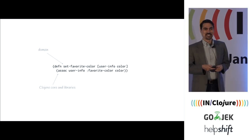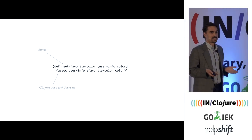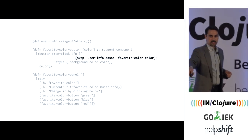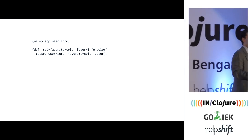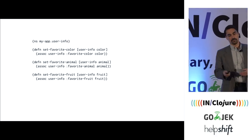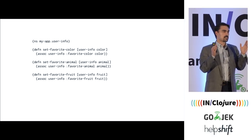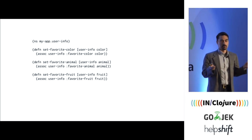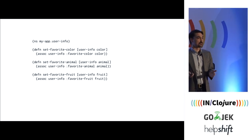Maybe this seems too simple — too basic. But we don't do this enough. We don't actually sit there and think about what our operations should be. I suggest adding a new namespace called user-info where all those operations will go. We add set-favorite-color, set-favorite-animal, set-favorite-fruit — they all look very similar. Now we have a nice check: before, if you misspelled the keyword, nothing would catch it. But if you're calling a function and that function doesn't exist, Clojure will tell you.